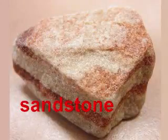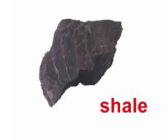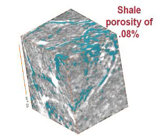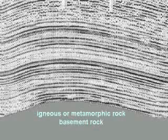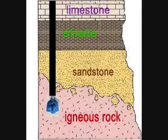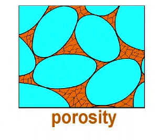Oil is found in sandstone and limestone, but it can also be found in shale. However, shale has a porosity of about one percent, so the oil is very difficult to get out. Basement rock is either igneous or metamorphic rock and contains no oil — so if you are drilling and you hit basement rock, you are done drilling. Crude is found in reservoirs, not in underground lakes or pools, but in holes in the reservoir rock.